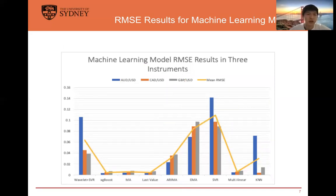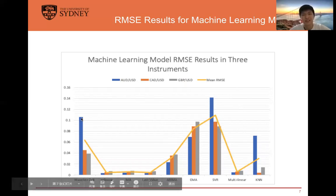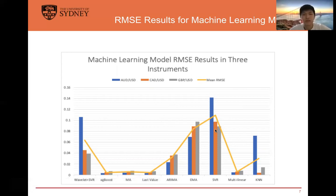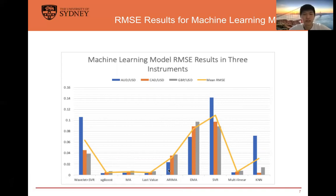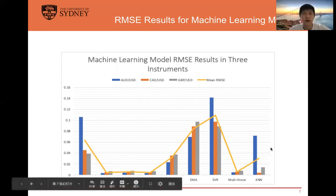Here are the RMSE results for machine learning models. The two SVR models have the same distribution, and we can tell that wavelet transform improved the performance of SVR. XGBoost has the best mean performance. But surprisingly, KNN has a really low RMSE on the CAD to USD dataset.